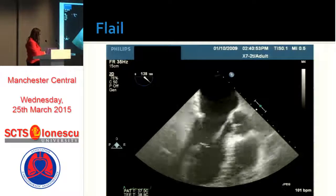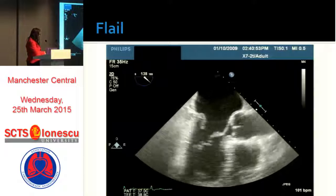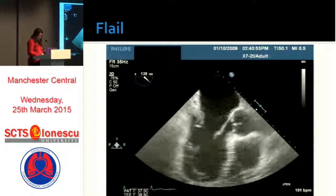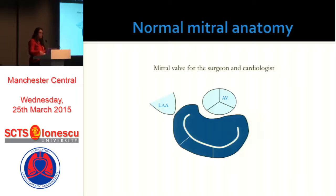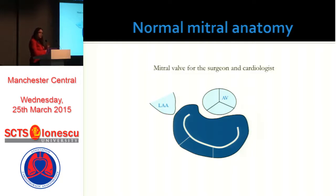Here's an example of complete overriding of a leaflet with ruptured cords attached at the ends. The more important part of functional assessment is actually where the valve is leaking from. This is quite difficult from TOE, which gives 2D cut planes that you have to conceptualize in 3D — unless you have 3D echo available. When thinking about whether the valve is leaking from P1 or A2, we need to know our anatomy.